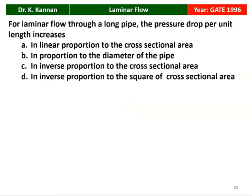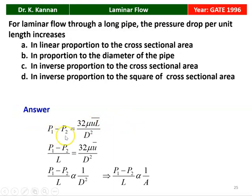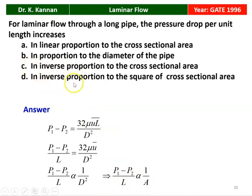Next question from the GATE 1996 question paper. For laminar flow through a long pipe, the pressure drop per unit length increases: (A) in linear proportion to the cross-sectional area, (B) in proportion to the diameter, (C) in inverse proportion to the cross-sectional area, or (D) in inverse proportion to the square of the cross-sectional area. From the Hagen-Poiseuille equation: (P1 - P2)/L = 32μŪ/D². Pressure drop per unit length is proportional to 1/D², which converting to area gives inverse proportion to A. So option C is correct.